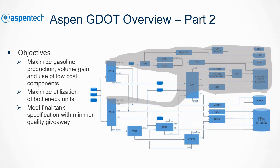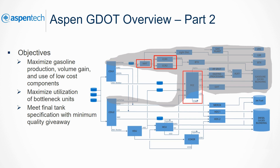GDOT can also optimize a refinery for gasoline production. This application expands on the scope for the aromatic application. GDOT coordinates the crude distillation unit, naphtha hydrotreaters, reformers, the fluidized catalytic cracker, and gasoline blending using a pseudo-component model.